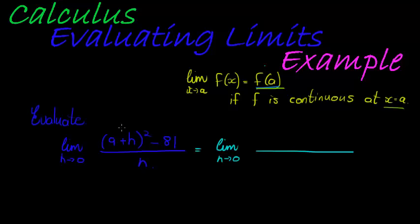To do that, I first looks like I'm going to have to simplify this. If I do simplify this, I get 9 plus h squared, which means it's 9 plus h times 9 plus h, which gives me 81 plus 18h plus h squared minus 81 over h.